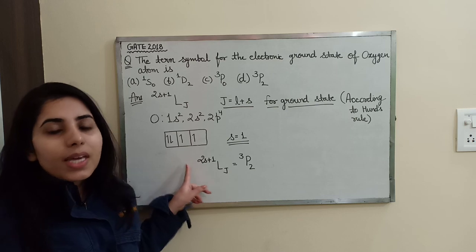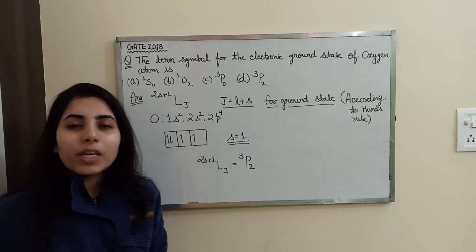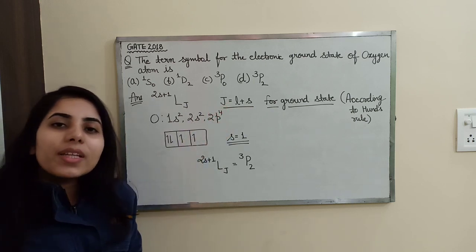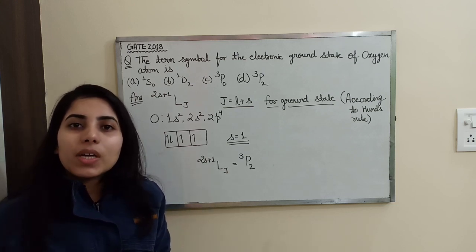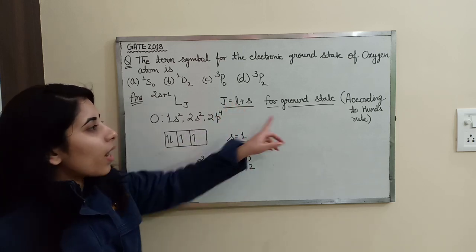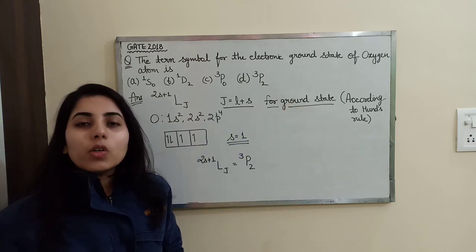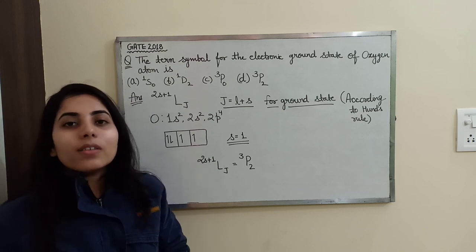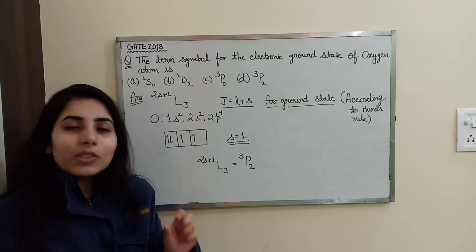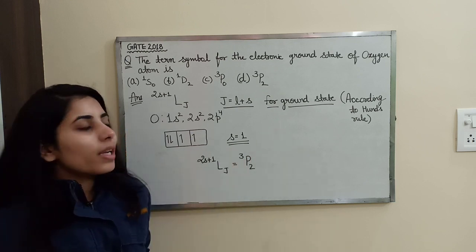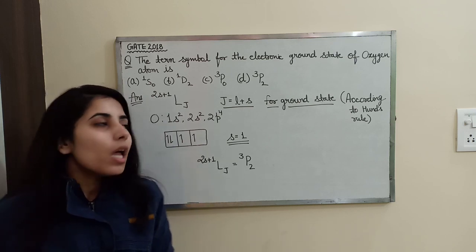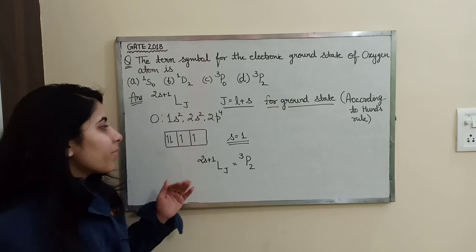In this case, according to Hund's rule, we are looking for the ground state for which the value of J will be the highest or largest. So J = L + S will represent the ground state. I have made a separate video on Hund's rule — you can watch that for each and every important point about this rule, which tells you about the ground state and all other states for which you want to find the spectroscopic term symbol.